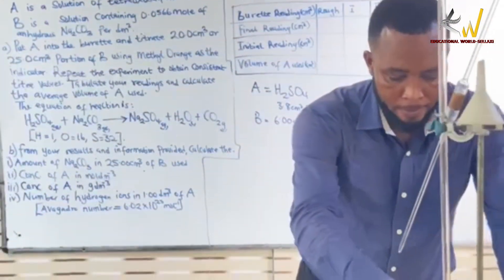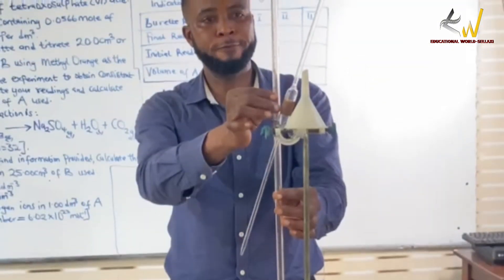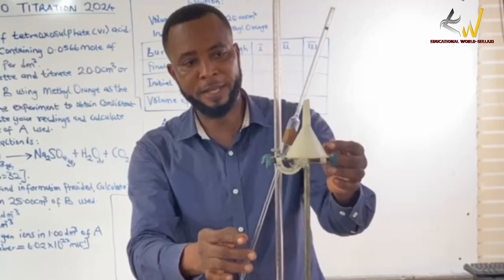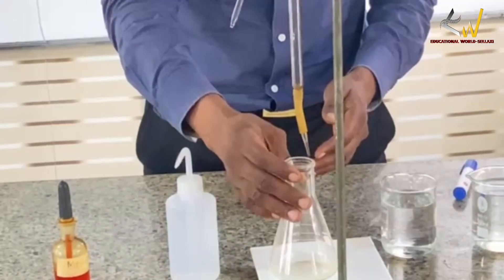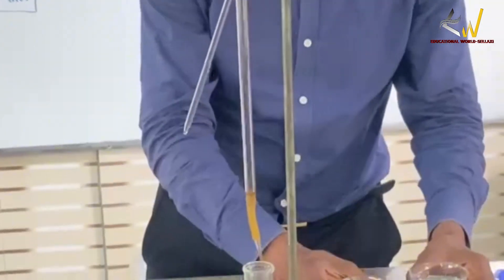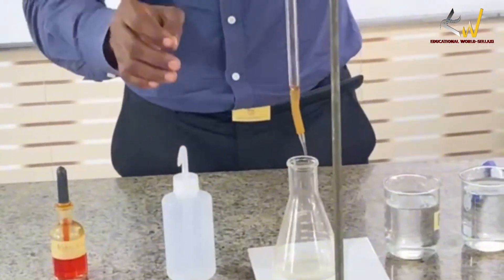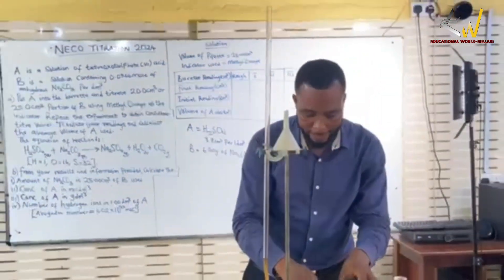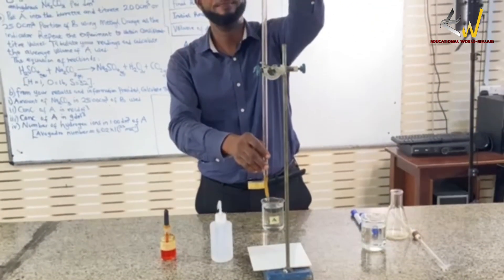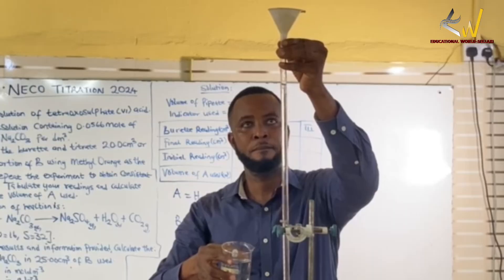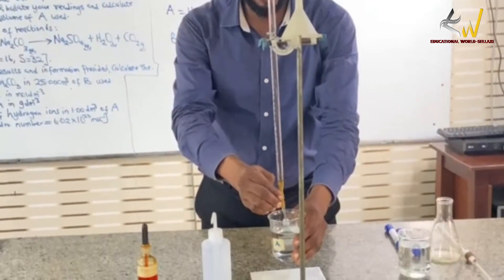Now with me here in my titration setup, these are the apparatus we have. We have the burette with its stand and clamp, the white tile, the conical flask, and the funnel. Solution A and solution B are here, along with the distilled water and my indicator to show the color change. I'll fill the burette with solution A using my funnel, and zero it to 0.00 cm³.